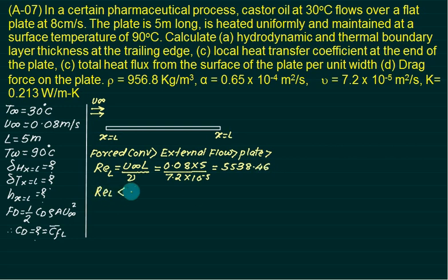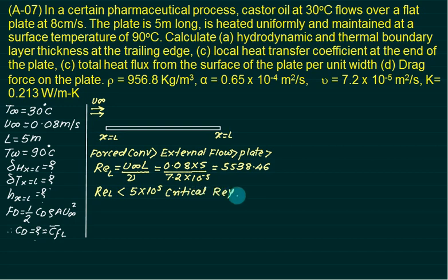The critical Reynolds number for external flow is 5 × 10⁵. Since 5538.46 is much less than 5 × 10⁵, the entire flow is laminar. This completely defines the problem. We can now go to the table for forced convection, external flow, flat plate, laminar flow.